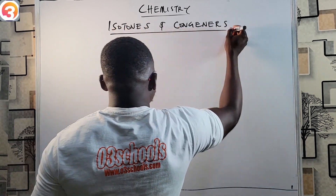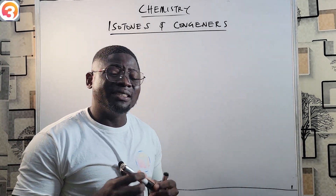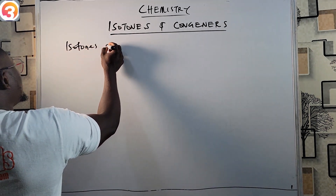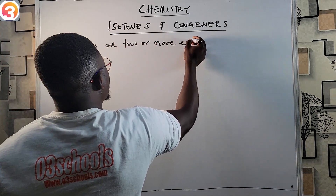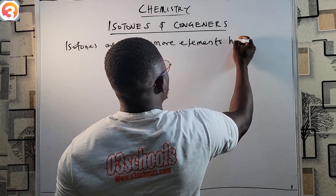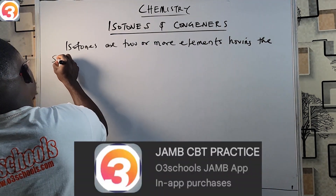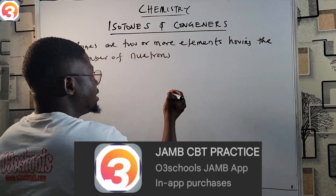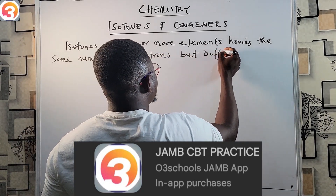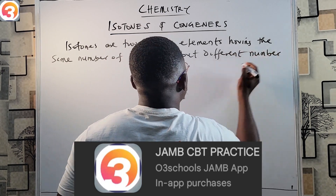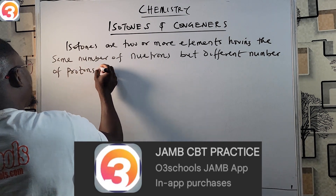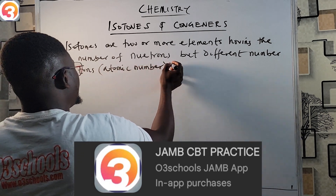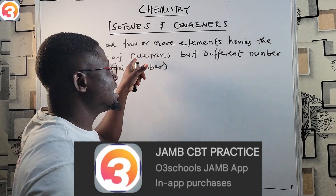Isotones are two or more elements having the same number of neutrons but a different number of protons. The number of protons is the same as the atomic number — you should know that by now. So isotones have different atomic numbers but the same number of neutrons.